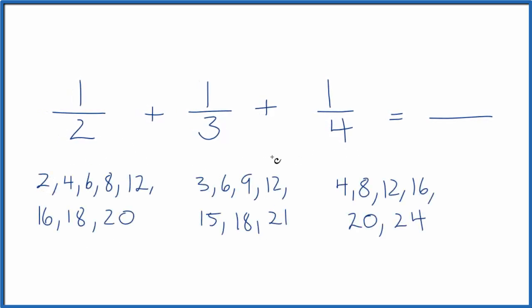So these are the multiples here for each number. And if we look, the number that's common between these sets of multiples, the lowest number that's common, that turns out to be twelve. So twelve is the common denominator.